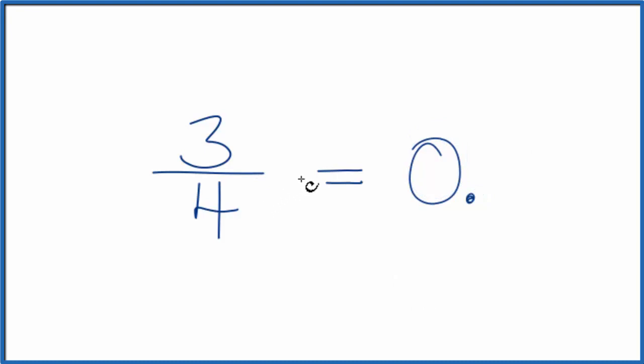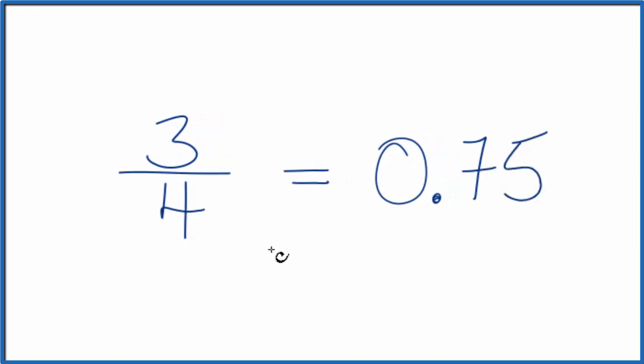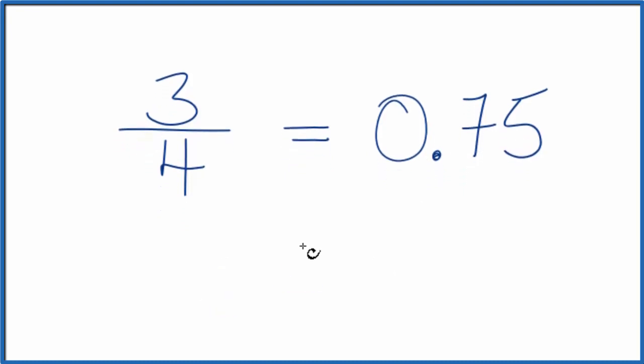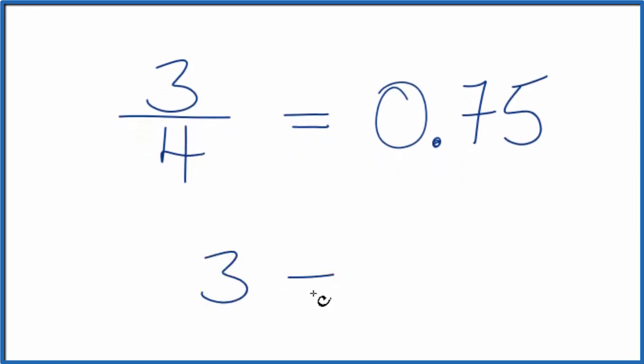We could just take our calculator and divide 3 by 4. And if we did that, we would end up with 0.75. So 3 fourths, the fraction as a decimal, that's 0.75. Essentially, we're dividing 3 by 4.